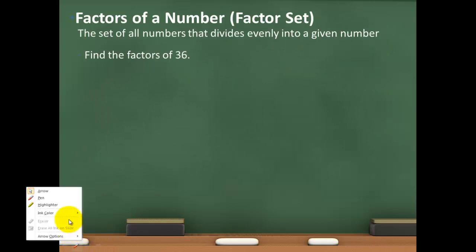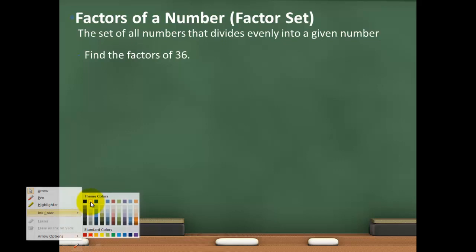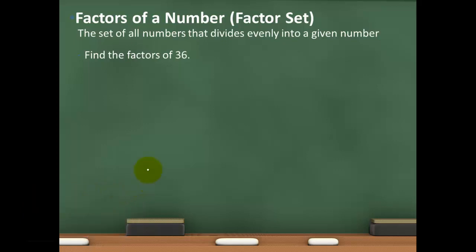Before we get to fractions, I want to talk about what we call the factors of a number. A factor of a number is a number that divides evenly into another number or a given number. We're going to want to find a factor set, meaning all of the natural numbers that go evenly into that number.